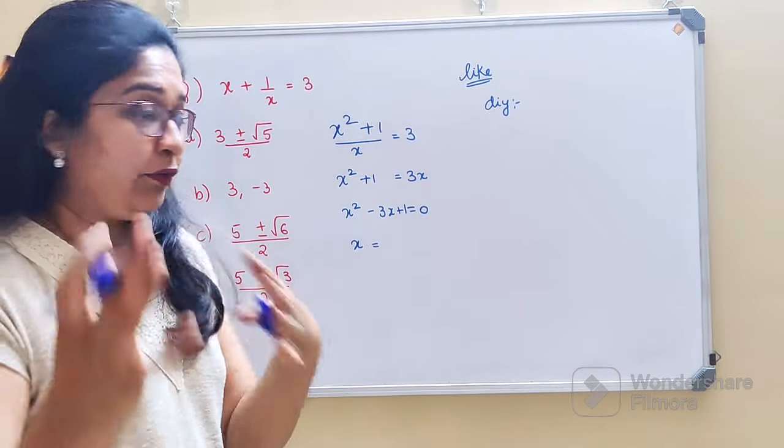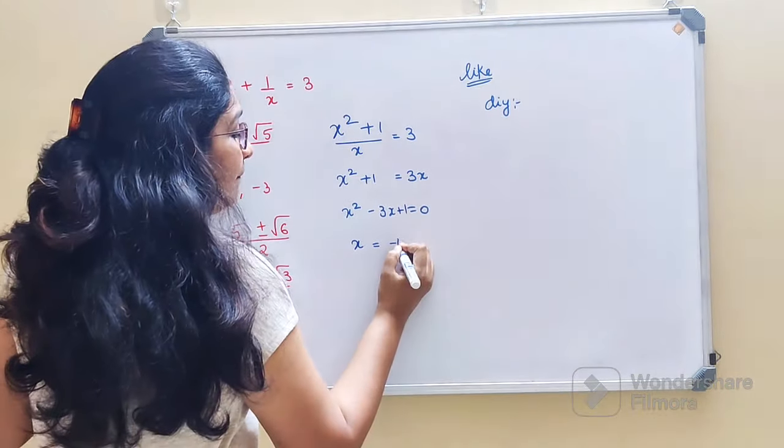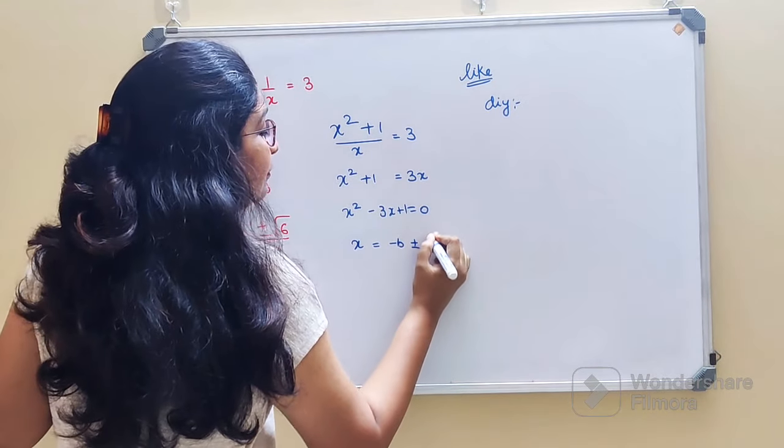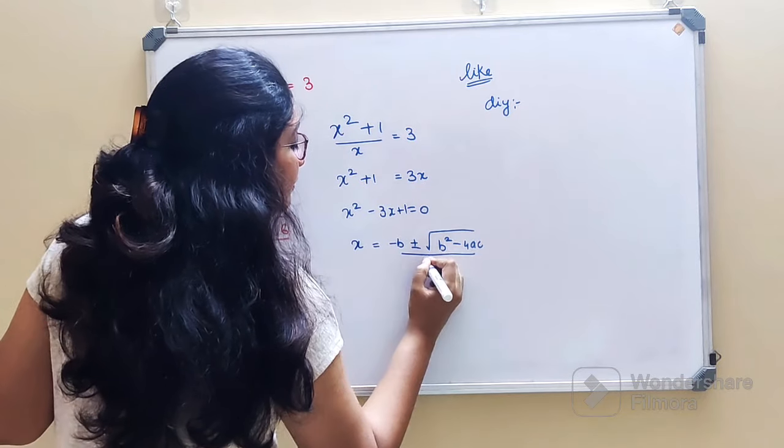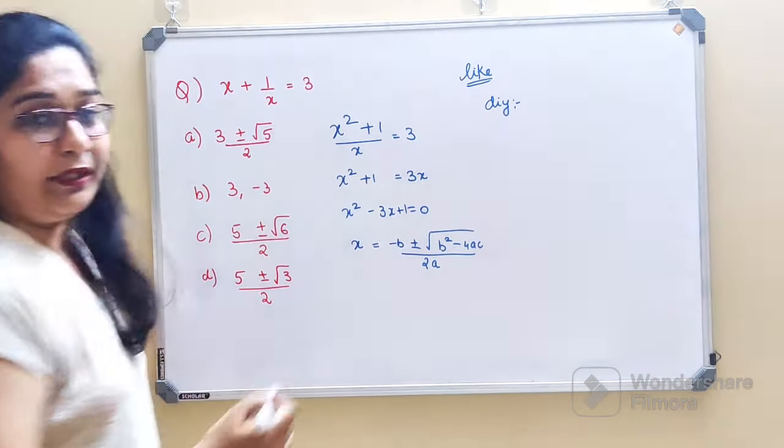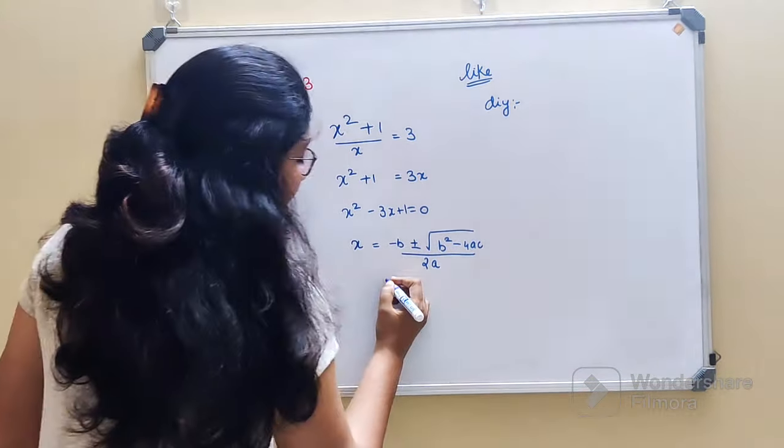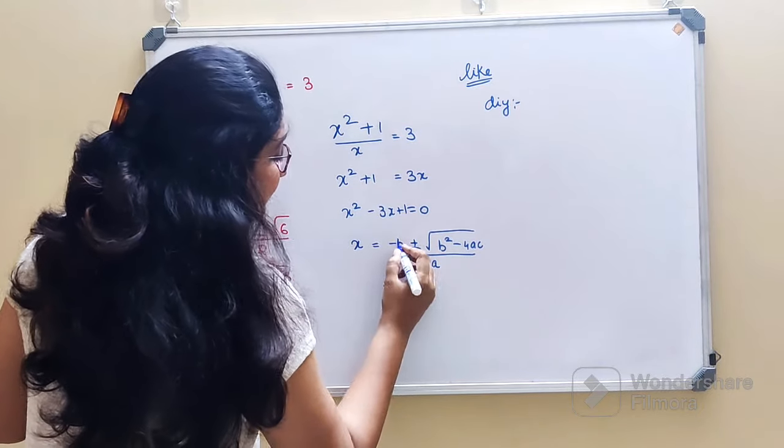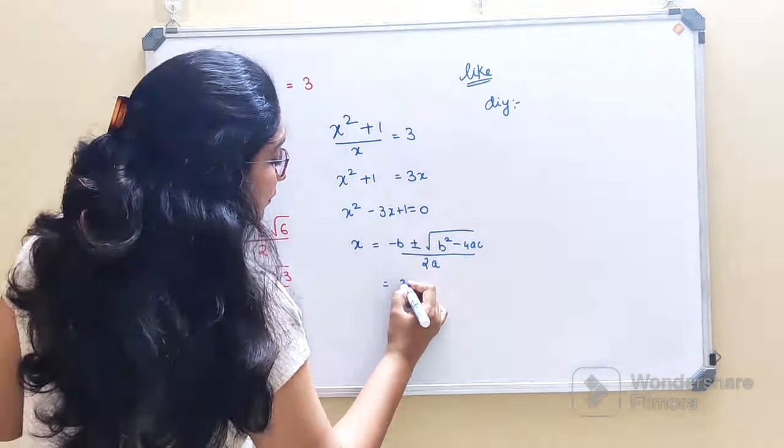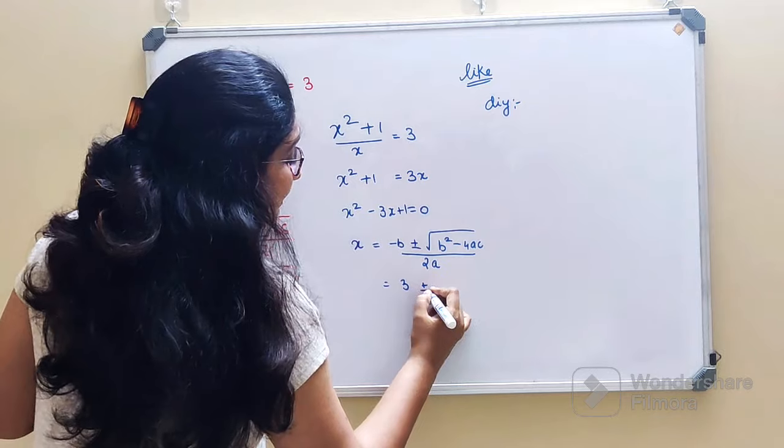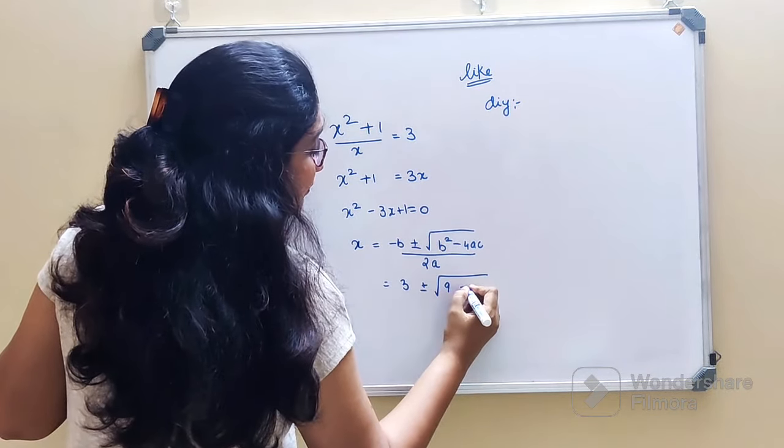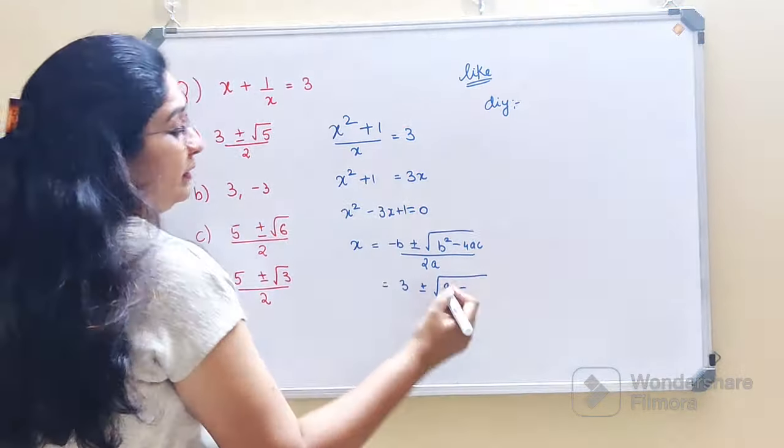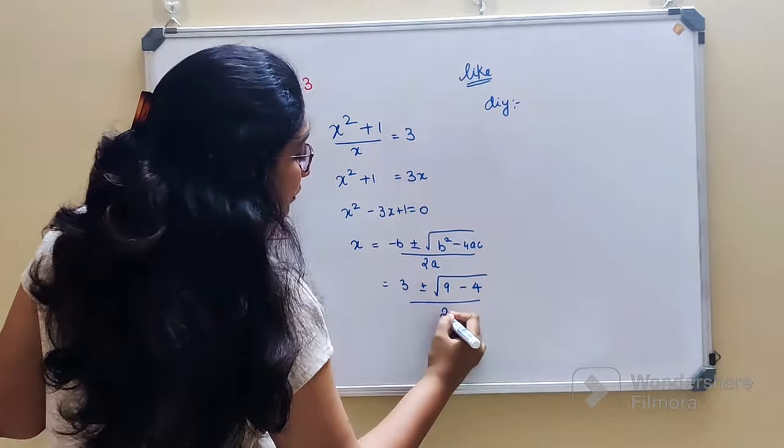Which is what? Minus b plus minus root of b squared minus 4ac upon 2a. Let's put the values. So here we have minus b, so minus of minus 3 gets you what? Plus 3 plus minus root of 3 squared is 9.